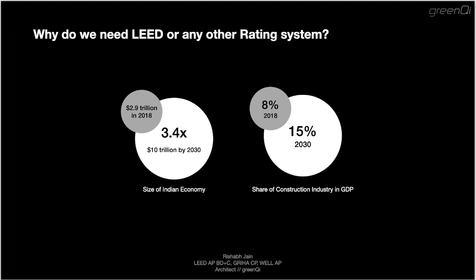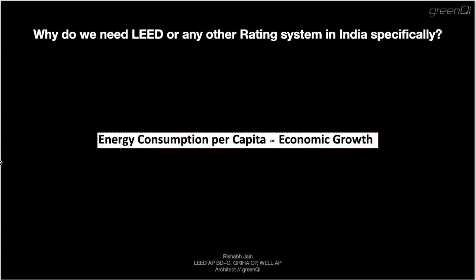This means people will have more money and better economic status. This would have a direct impact on the built environment as the need for houses and commercial spaces would also rise. Similarly, the share of the construction industry in GDP would also rise drastically by 2030. More houses means more carbon footprint. Built environment consumes energy in the form of electricity and gas, so energy consumption per capita is directly proportional to economic growth of the country.